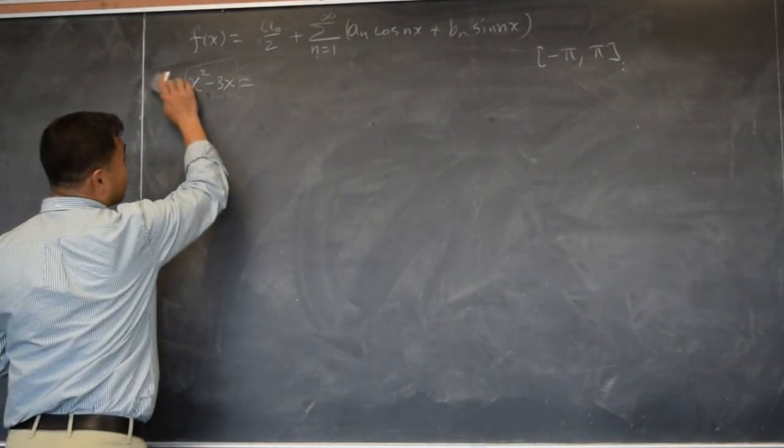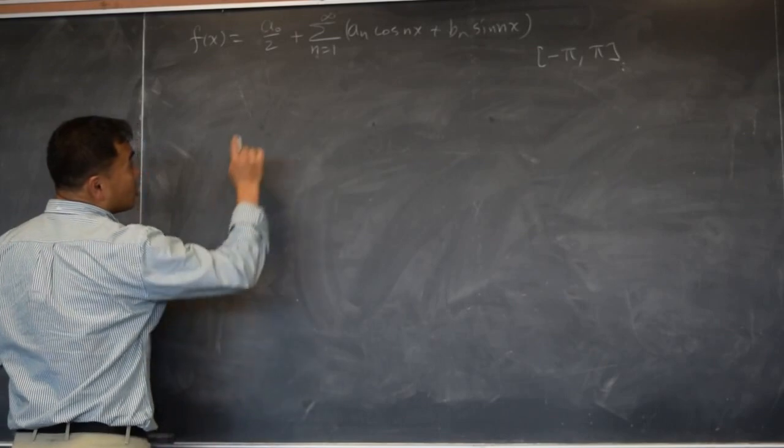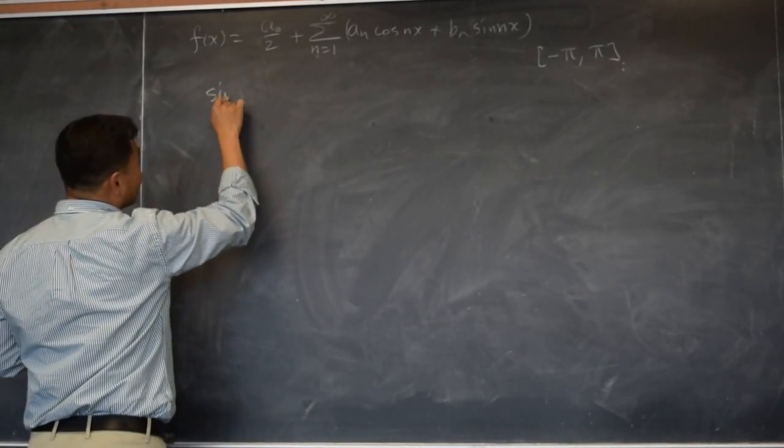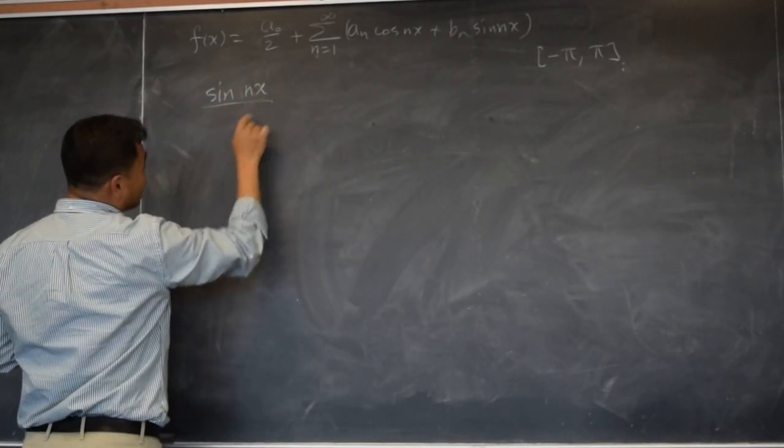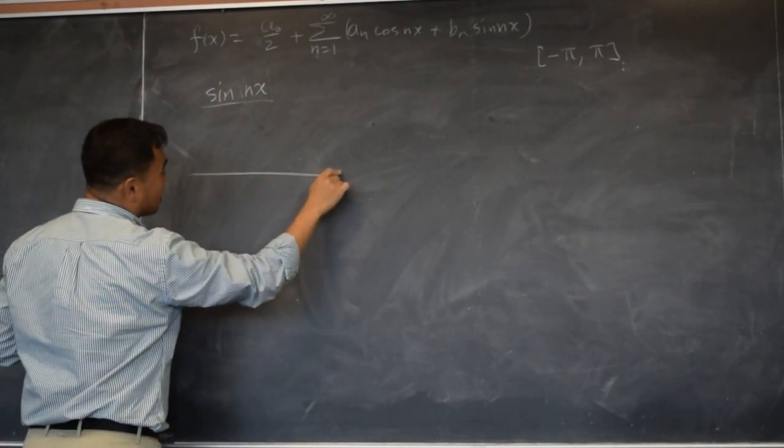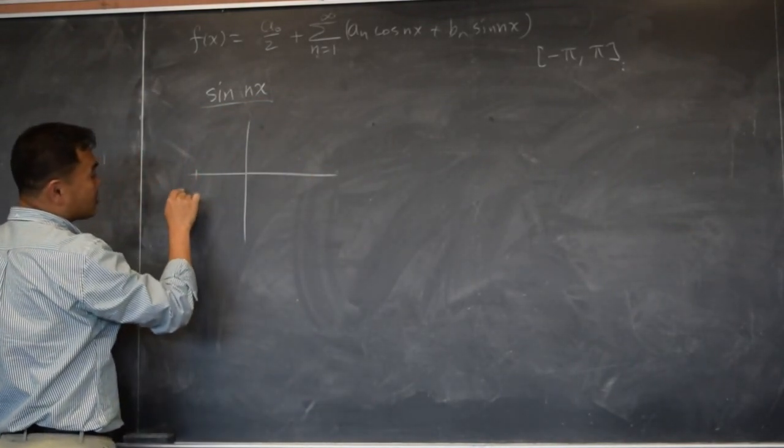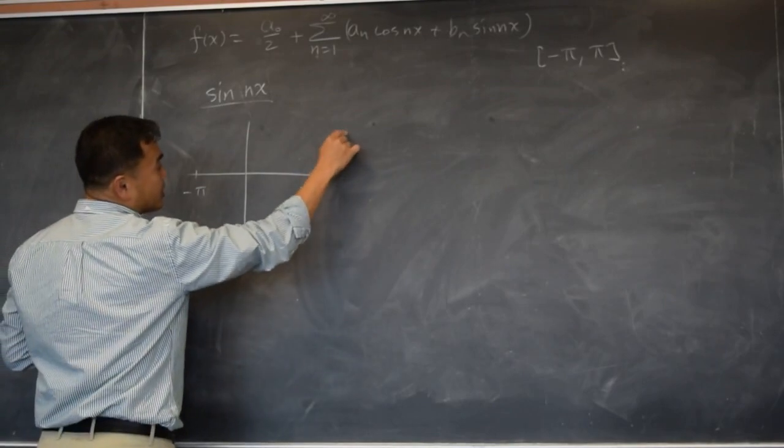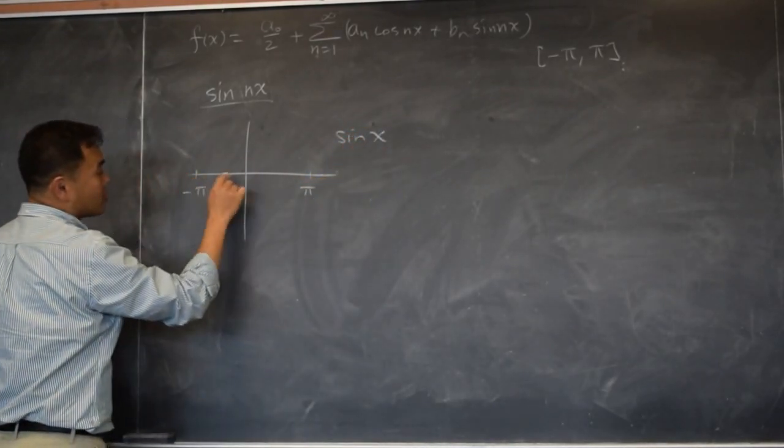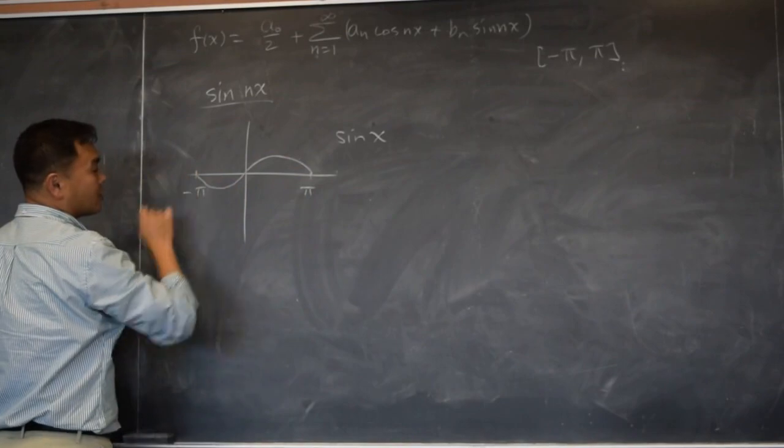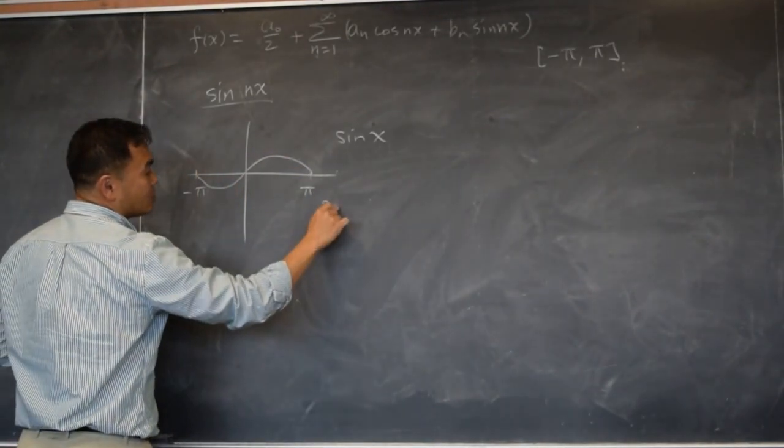And let me show you the formula first. First, what is the significance of this sine nx? Well, the significance of sine nx is the following. If you drew the graph from negative pi to pi, sine x will be the graph that goes like that. That's sine x. What about sine 2x?